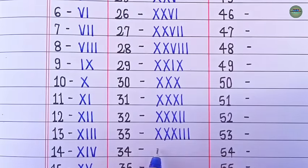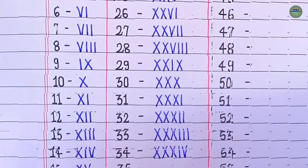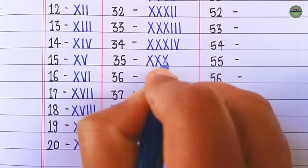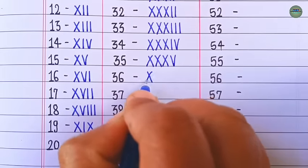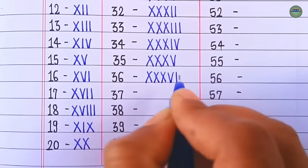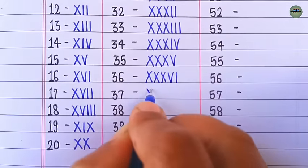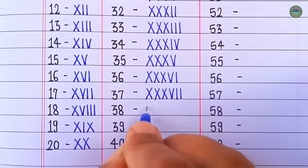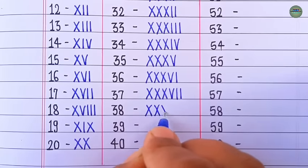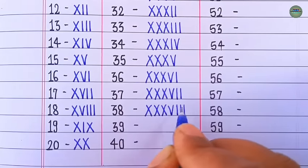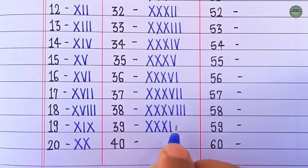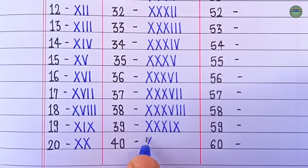31 is XXXI, 32 is XXXII, 33 is XXXIII, 34 is XXXIV, 35 is XXXV, 36 is XXXVI, 37 is XXXVII, 38 is XXXVIII, 39 is XXXIX, 40 is XL.